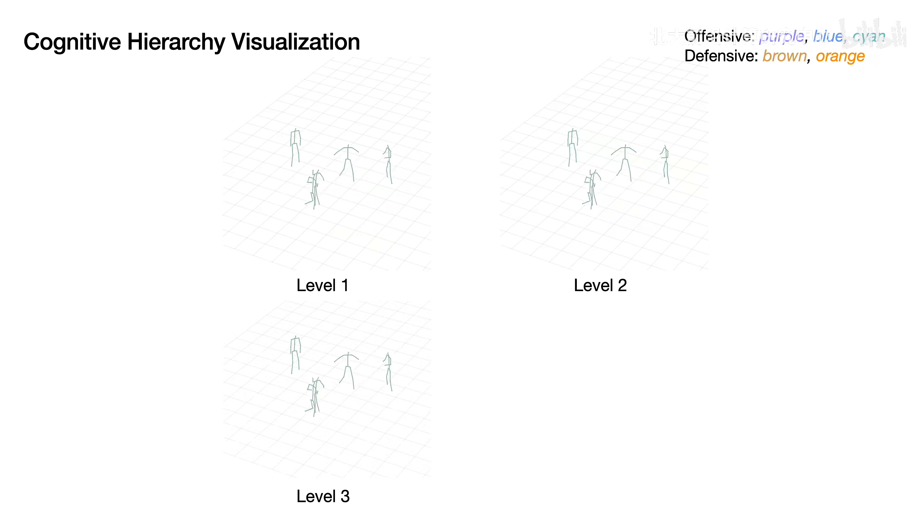The Level 3 actions are also closer to ground truth in this case. From these two examples, we can see that our cognitive hierarchy-based model iteratively refines the action predictions, producing not only accurate final predictions, but also an interpretable decision-making process. Thank you for watching.